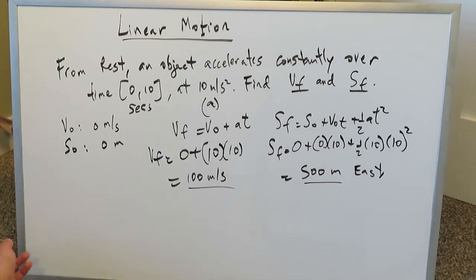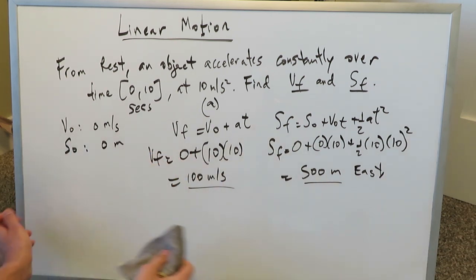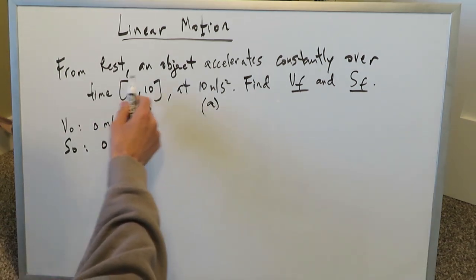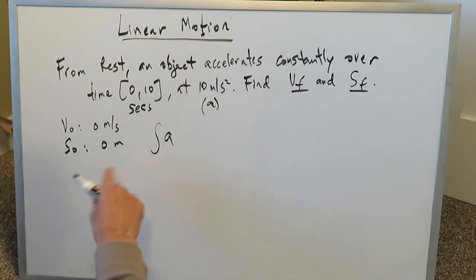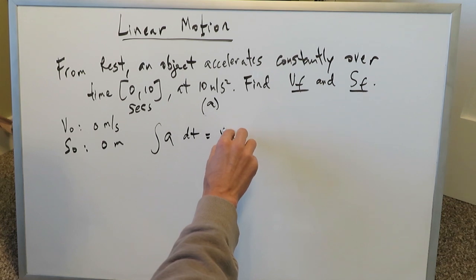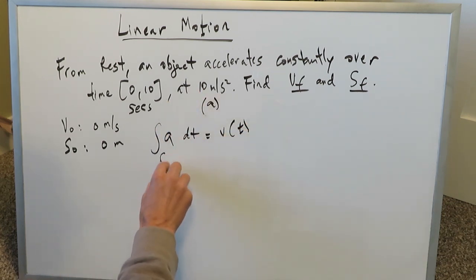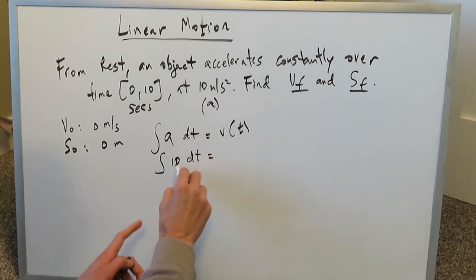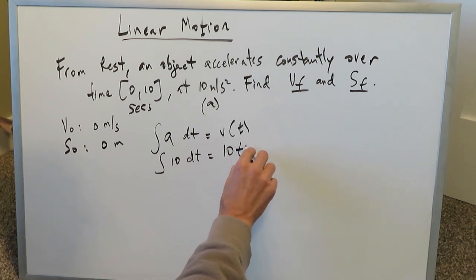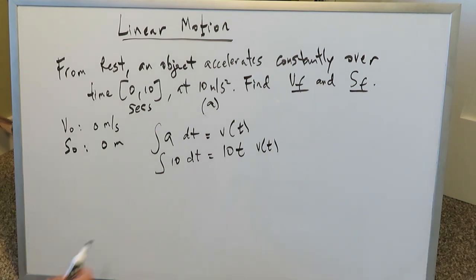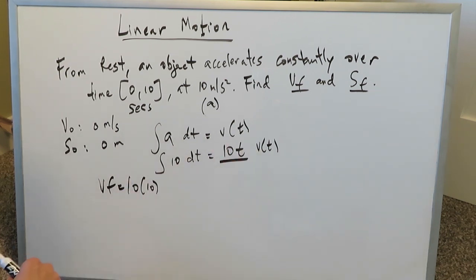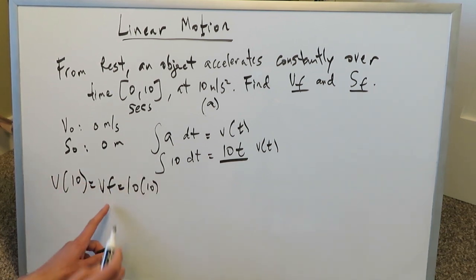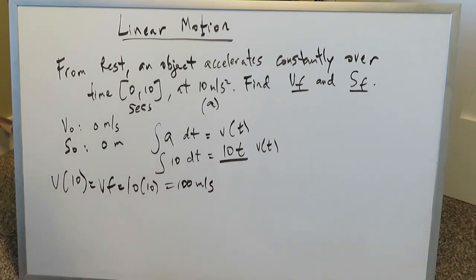Now the calculus way. We have an acceleration of 10, and using the loop — from acceleration to velocity — we take the integral of 10 dt, which gives us 10t as the velocity function, in meters per second. To find the final velocity at 10 seconds: velocity at t=10 equals 10 times 10, which is 100 meters per second, confirming our earlier answer.